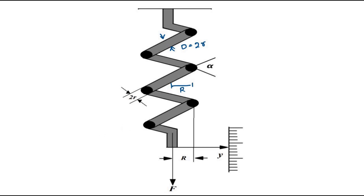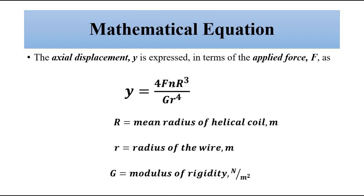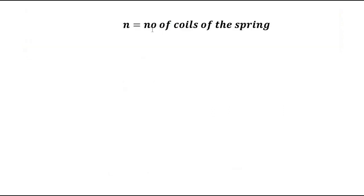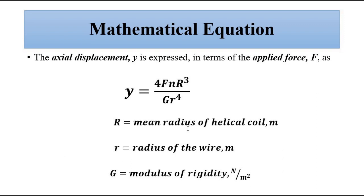n is the number of turns of coil. Capital G is the modulus of rigidity, which is the ratio between shear stress and shear strain. We have already covered this in the material science section and also in previous videos of sensors and transducers. Small n is the number of turns of the spring.